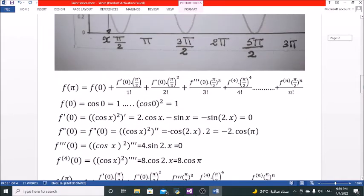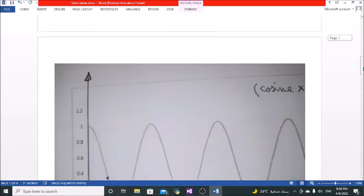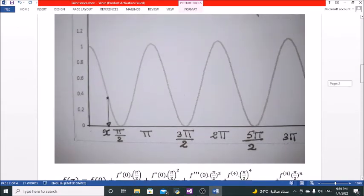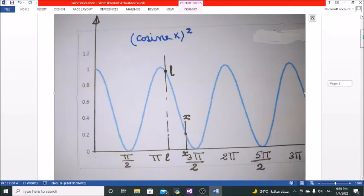Now let's take here a function like cosine x all squared, and let's find its value for example.